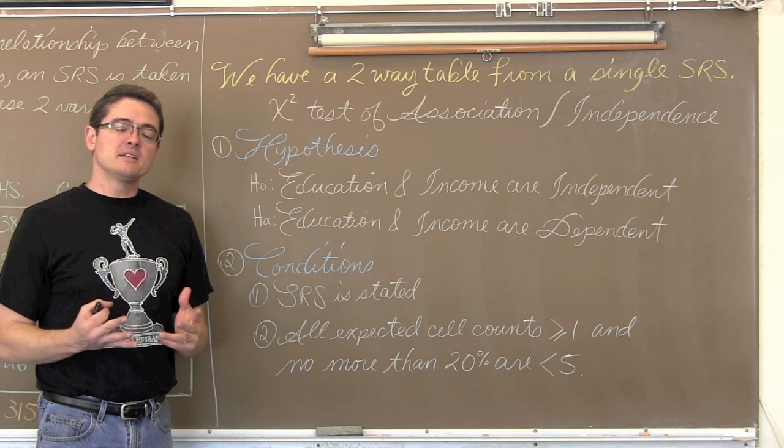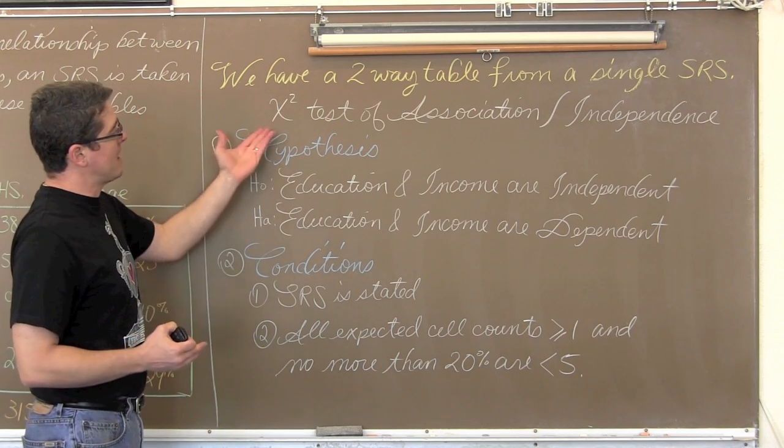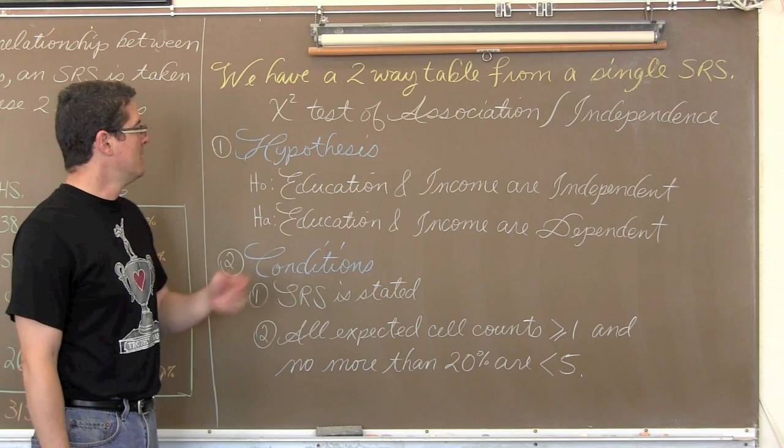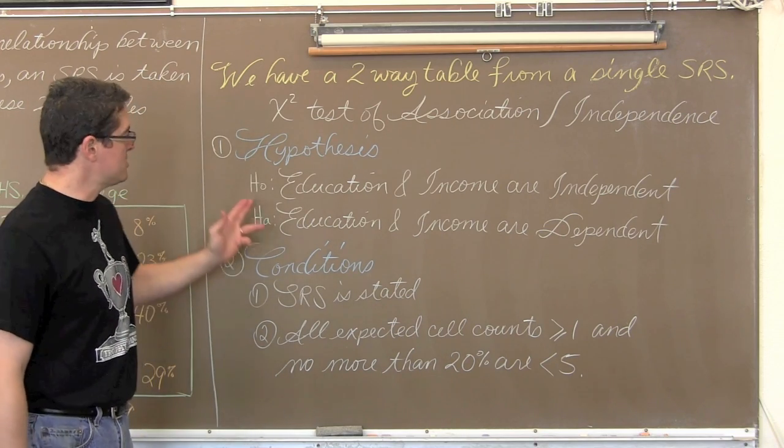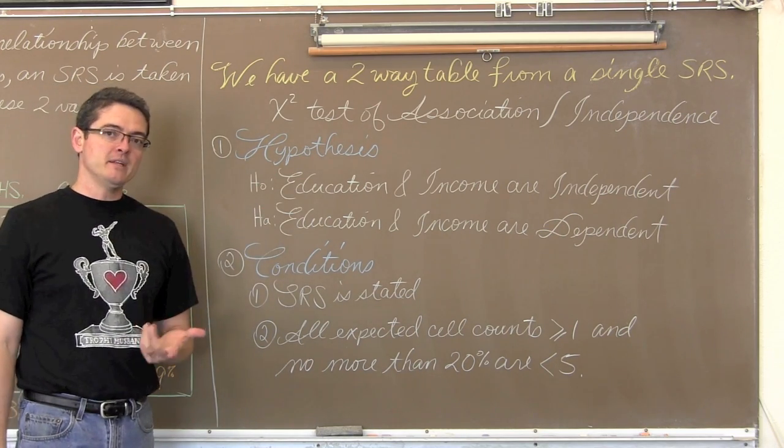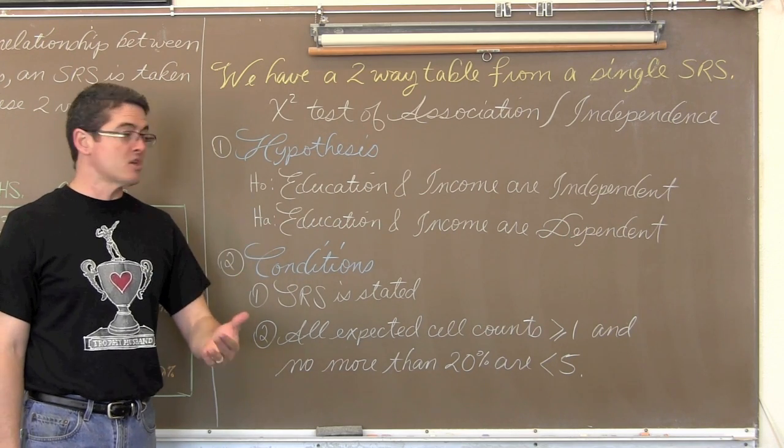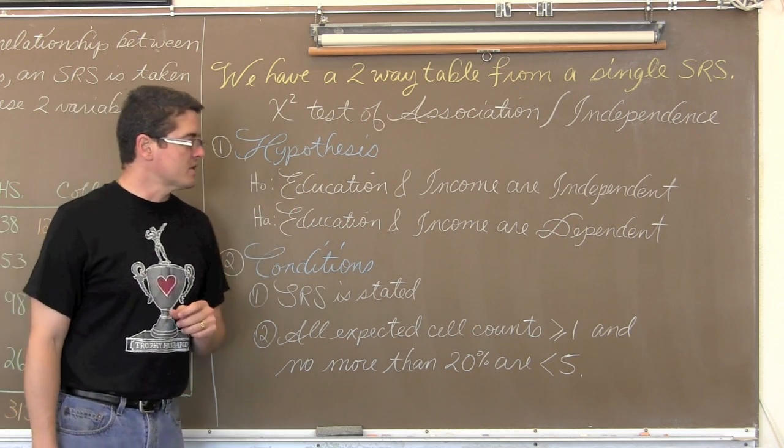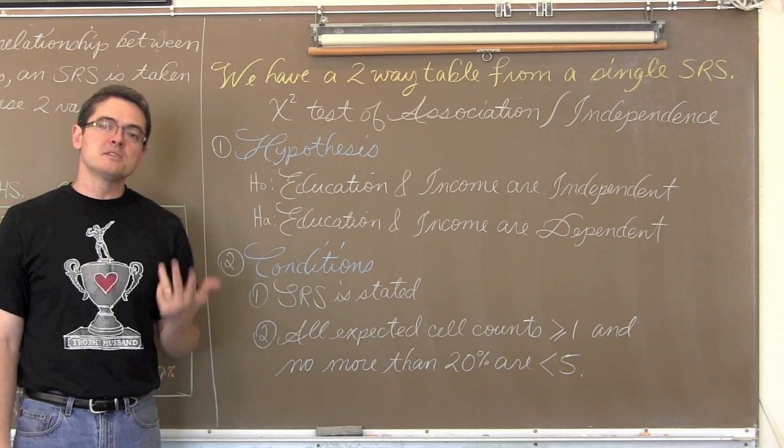Since again we have collected this data from a single SRS, now we are going to call it a chi-square test for association or independence. Our hypothesis statement is H0, education and income are independent. You could also say there is no association between income and education. And Ha is that education and income are dependent, or that there is an association.